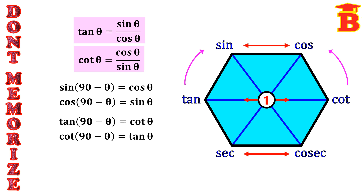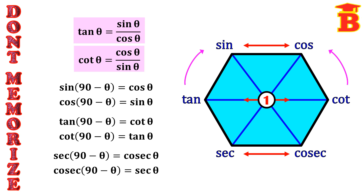Taking the third horizontal line, we have secant and cosecant, so we get the formulas sec(90° - θ) = cosec θ and cosec(90° - θ) = sec θ. So taking the horizontal lines, we get all the complementary angle formulas.